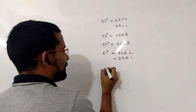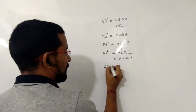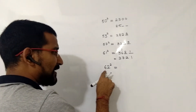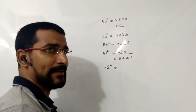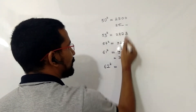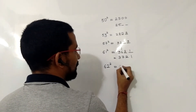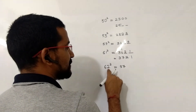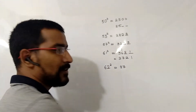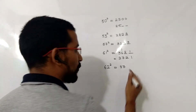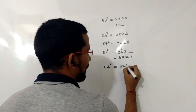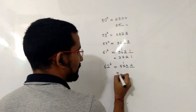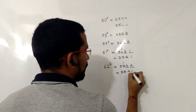Another example: 62 squared. 62 is 12 more than 50, so I add 12 to 25, giving 37. The square of 12 is 144, so I write 44 in the last two spaces and carry the 1 forward. The answer is 3844.